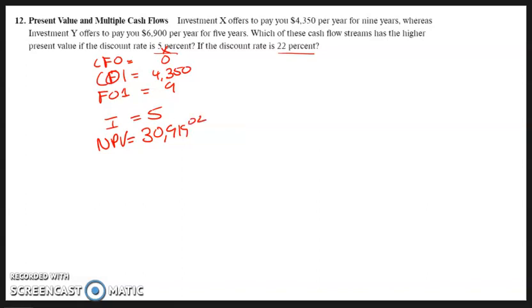So now at 22%, just change I to 22, compute the NPV, and that is $16,470.34.